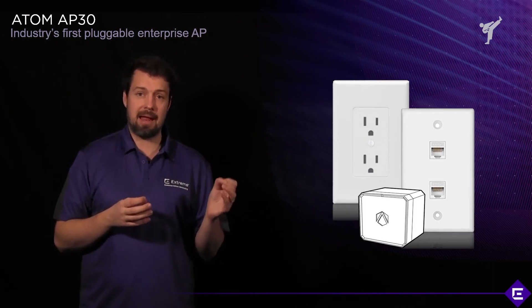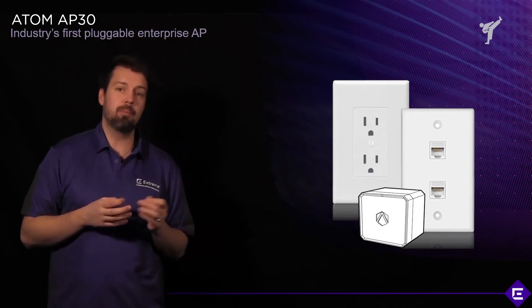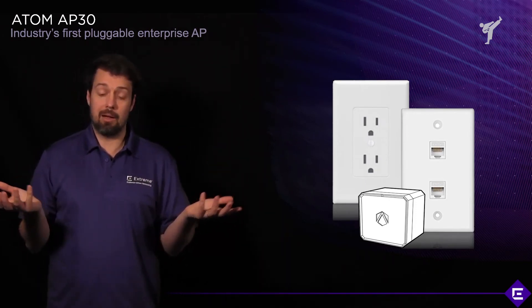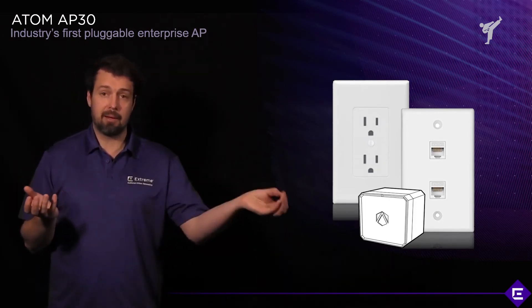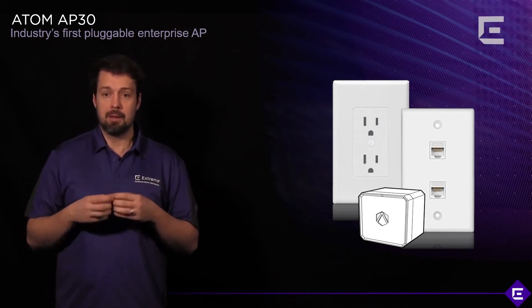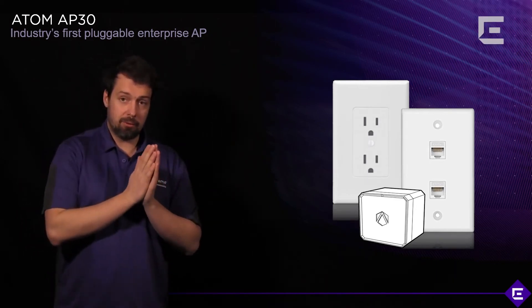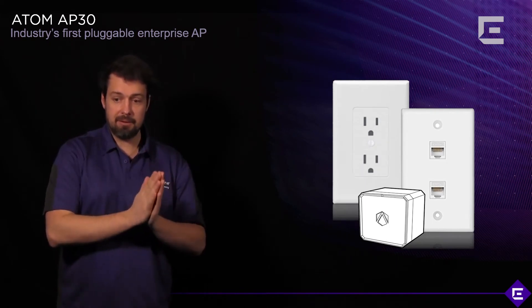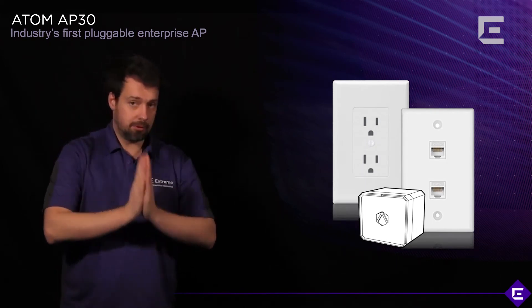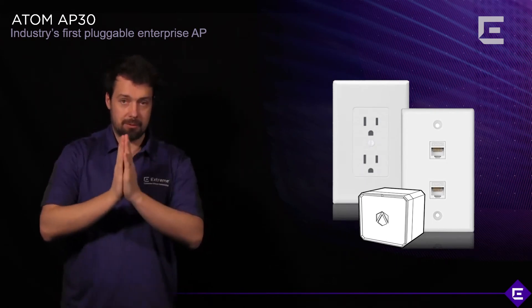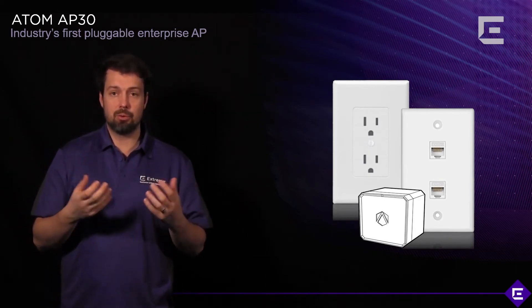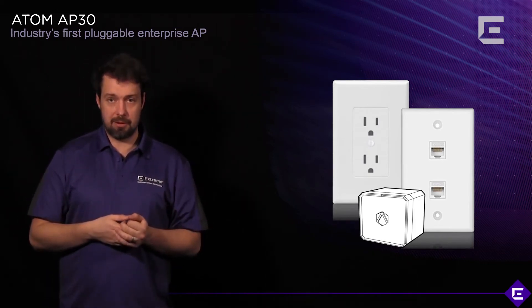If those areas also don't have any Ethernet cabling and you need to extend wireless to them, plug in a couple of ATOMs. They will provide the connectivity, the visibility, and all the security solutions available on our other platforms to those parts of the network.